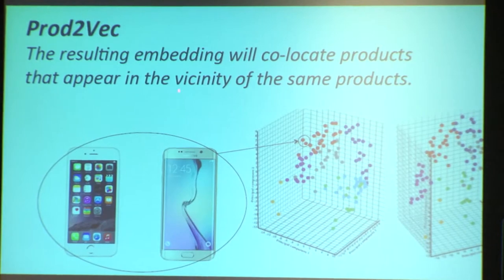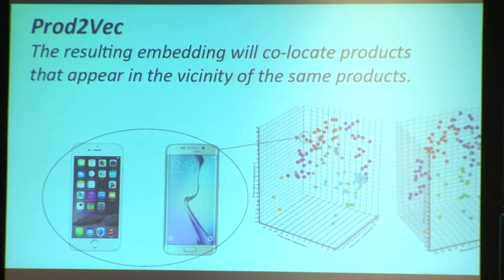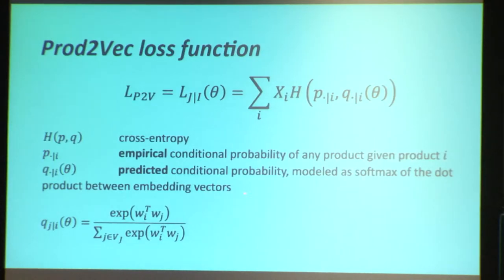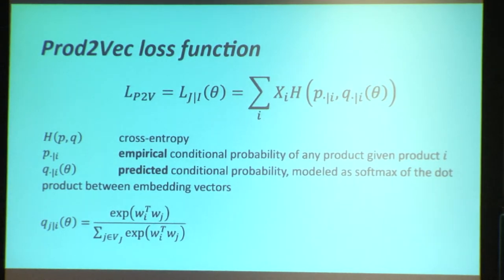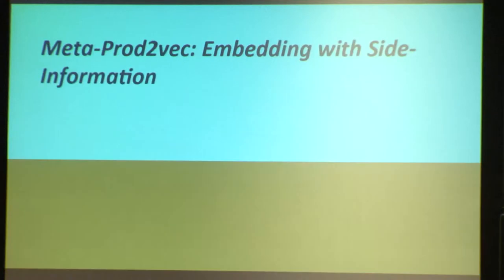Once you have these embeddings, you can compute cosine similarities or Euclidean distance, and you're supposed to get semantically similar products — products that kind of have the same function from the point of view of the user sequence — very close, and use that for recommendation. As a loss function, what Prod2Vec does, you can derive that it's actually doing the weighted cross-entropy between the empirical conditional distribution of the next product given the previous product, and the softmax representation. This is a good way to develop intuition for Meta-Prod2Vec.